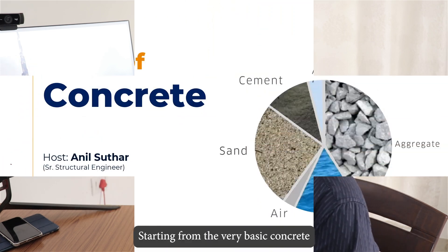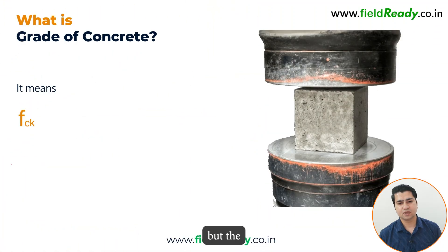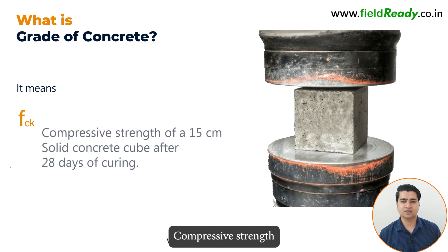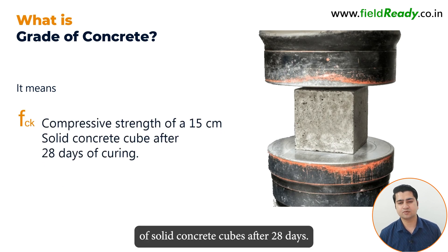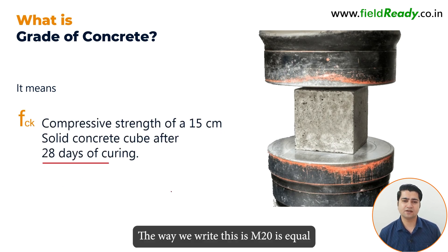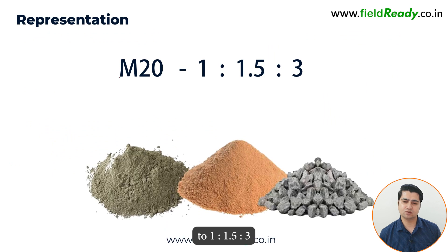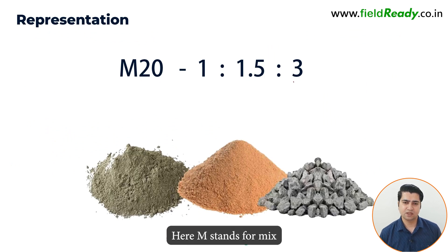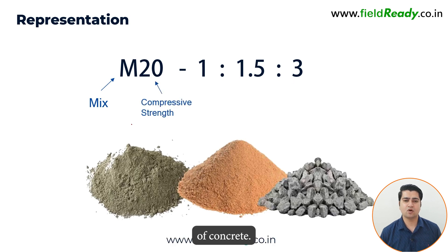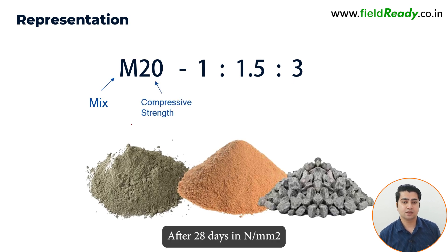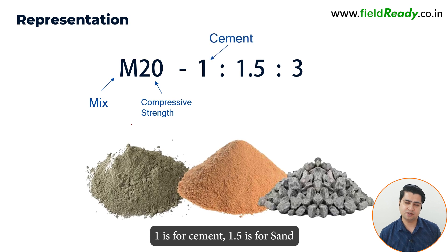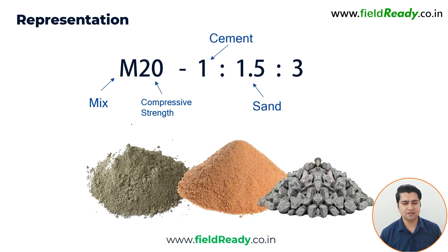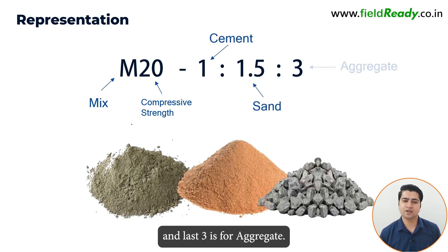Starting from the very basic, concrete grade is nothing but the compressive strength of solid concrete cubes after 28 days. The way we write this is: M20 = 1:1.5:3. Here, M stands for mix, 20 is the compressive strength of concrete after 28 days in newton per mm square, 1 is for cement, 1.5 is for sand, and 3 is for aggregate.